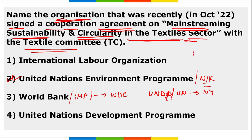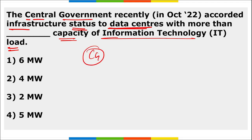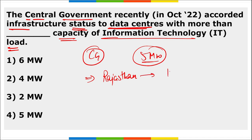Regarding global headquarter locations: World Bank and IMF are in Washington D.C., UNDP and UN are in New York, and UNESCO is in Paris, France. The central government accorded infrastructure status to data centres with more than 5 megawatt capacity of IT load. Rajasthan is the top state in solar energy, having achieved 10 gigawatts, followed by Gujarat and Maharashtra.